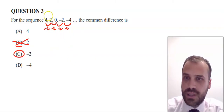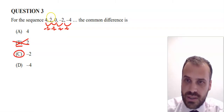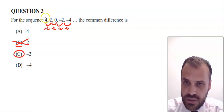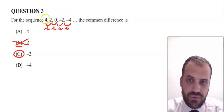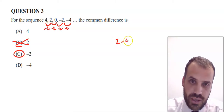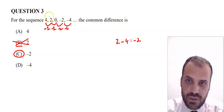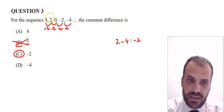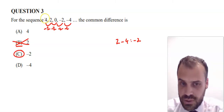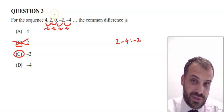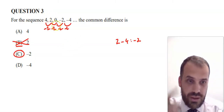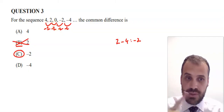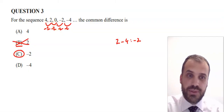The answer is negative 2. If you want a formula: take this term and subtract the previous term to get the common difference — so 2 minus 4 is negative 2. But really you should look at it and think: is the sequence going downwards or upwards?